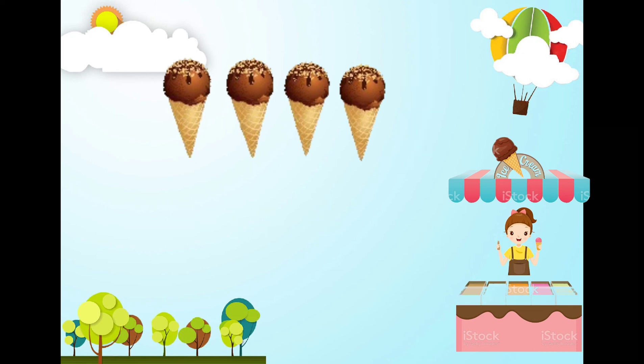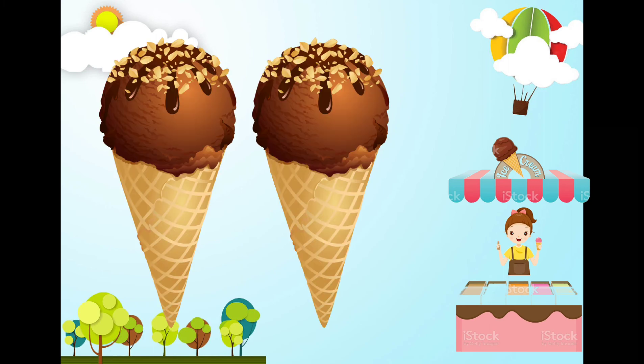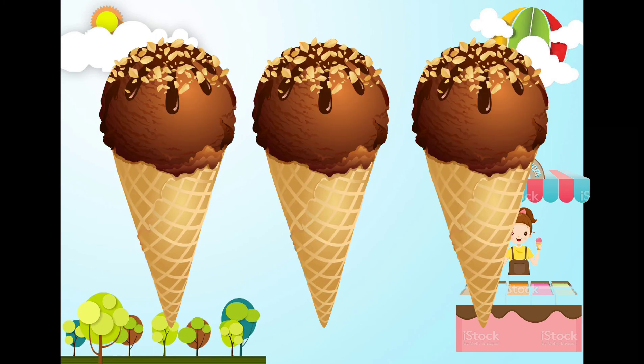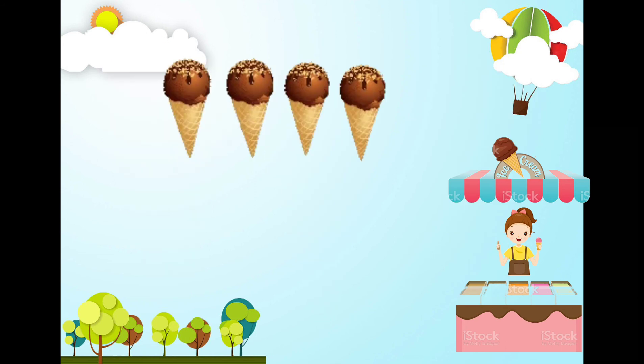I still have 4 ice creams to give away. And, I will give 3 of them to Ryo, Bam, and Cloyd. Let's do the subtraction. 4 ice creams minus 3 ice creams. There you go. 4 minus 3 equals 1.